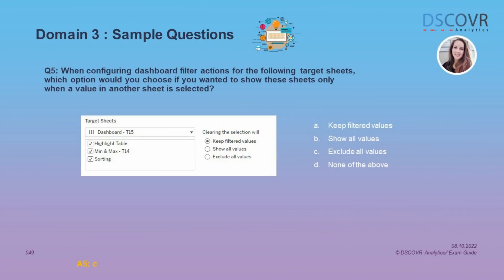Question number five asks us to configure dashboard filter actions for specific target sheets, and we need to select the option that will show these sheets only when a value in another sheet is selected. The correct answer is C — 'exclude all values'. If you are not familiar with these options, make sure you go ahead and review them.